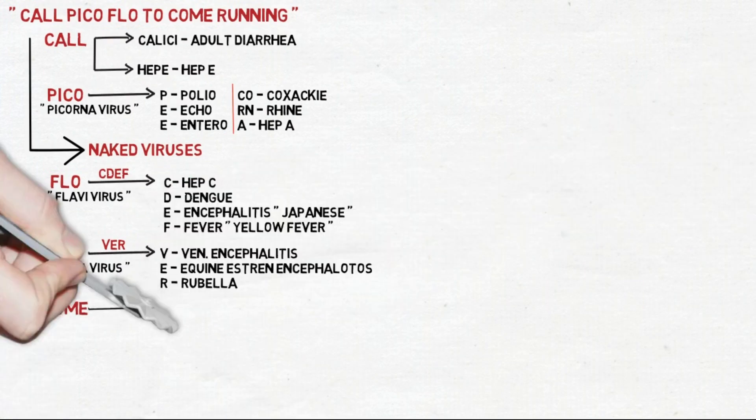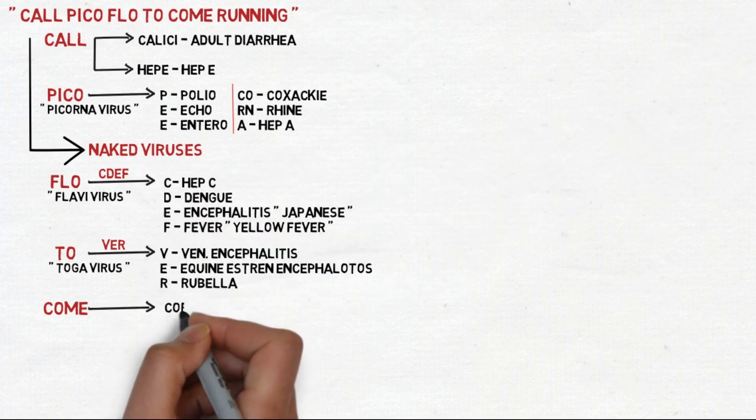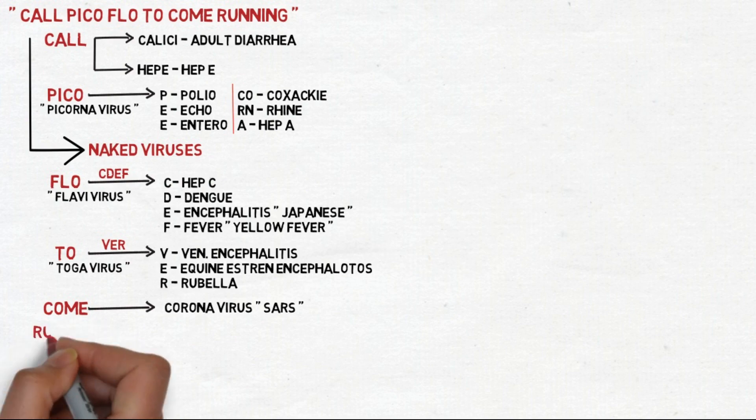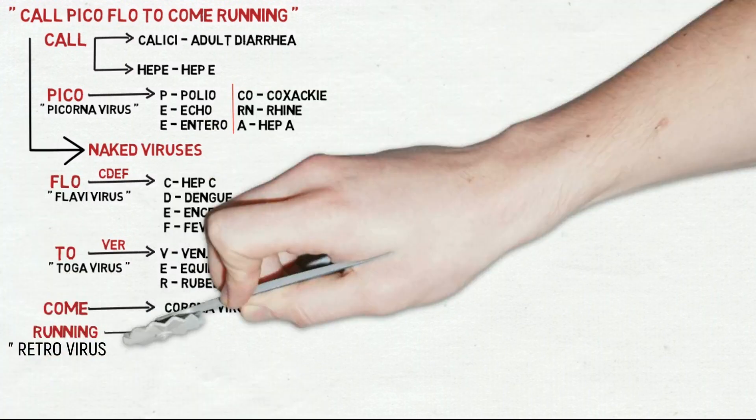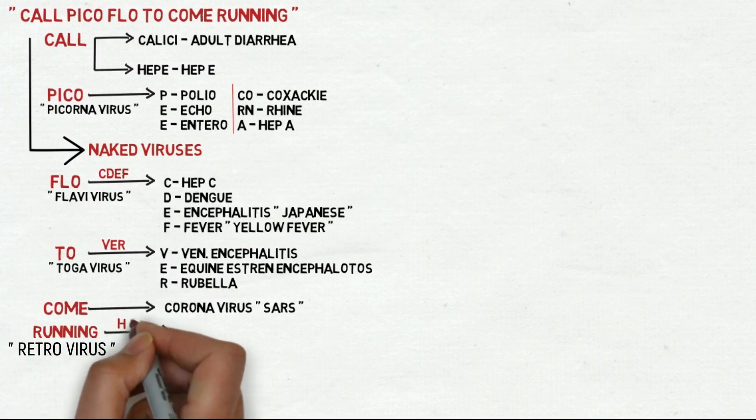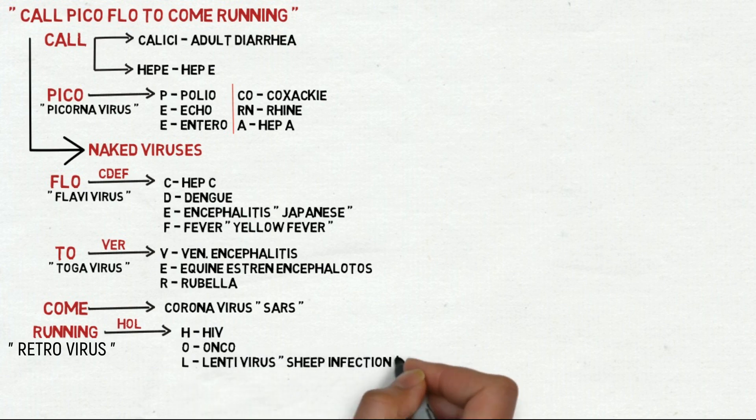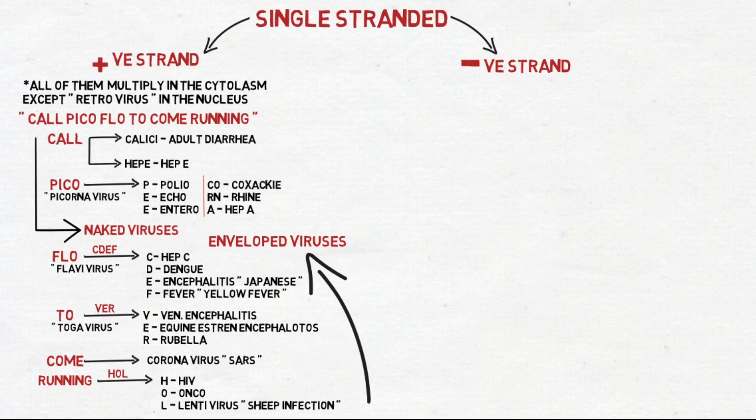COM stands for coronavirus, which is famous for causing the severe acute respiratory syndrome SARS. And lastly, RUNNING stands for the retrovirus which replicates in the nucleus, grouped by letters H-O-L: H for HIV, O for Onco, and L for Lentivirus which causes sheep infection. All these viruses are enveloped viruses.